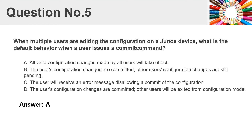Question number five. When multiple users are editing the configuration on a Junos device, what is the default behavior when a user issues a commit command? A. All valid configuration changes made by all users will take effect. B. The user's configuration changes are committed; other users' configuration changes are still pending. C. The user will receive an error message disallowing a commit of the configuration. D. The user's configuration changes are committed; other users will be exited from configuration mode. Answer: A.